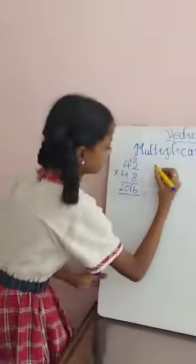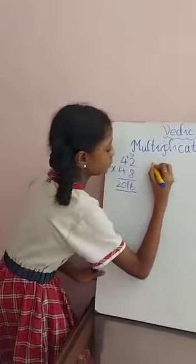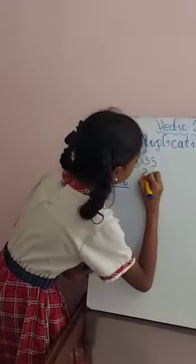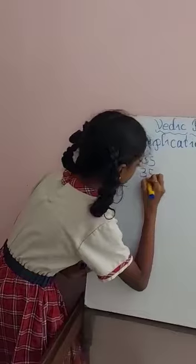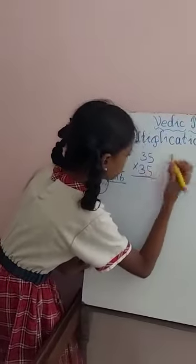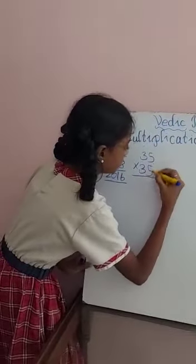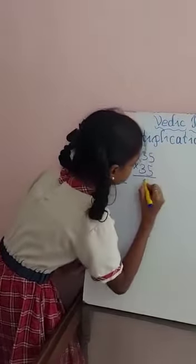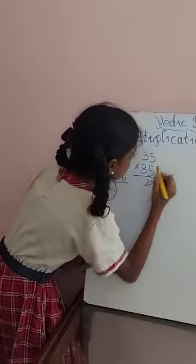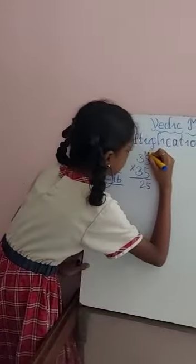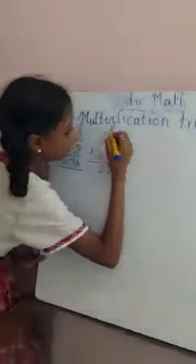Next one. 35 into 35. As with the last problem, 5 plus 5 is equal to 10. 5 into 5 is 25. And the successor of 3 is equal to 4. 3 times 4 is 12. So the answer is 1225.